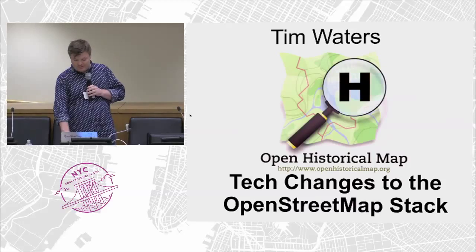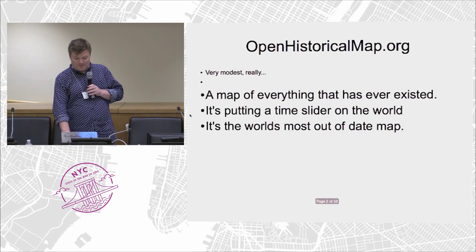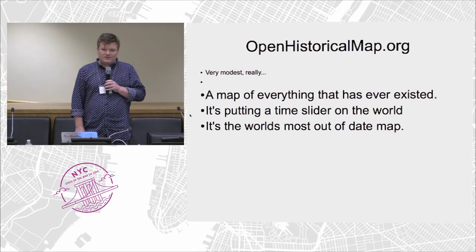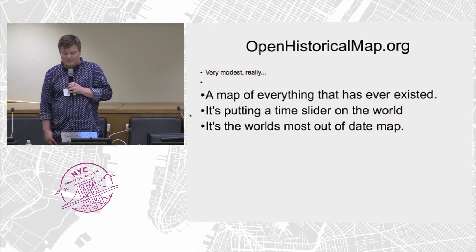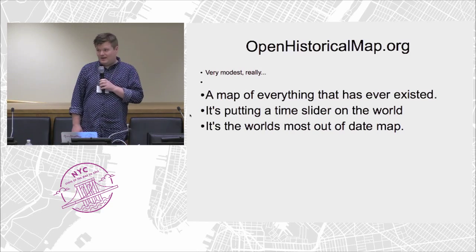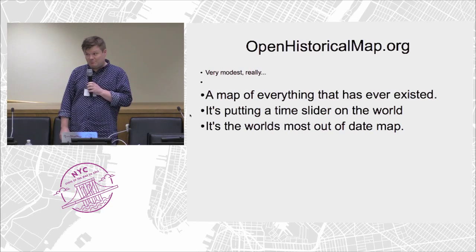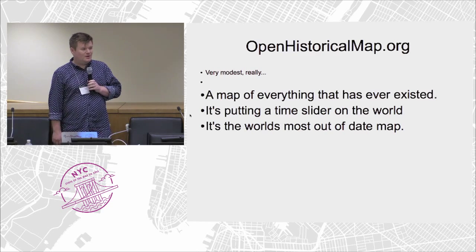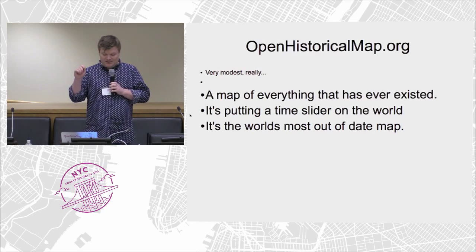I'm with Toppermancy, which has done a number of historical map projects with various organizations. Open Historical Map is more of a hobby project. We have a very modest project outline — we just want to make a map of everything that's ever existed at any time throughout history and prehistory. Another nice tagline is 'putting a time slider on the world,' and it's the world's most out-of-date map.